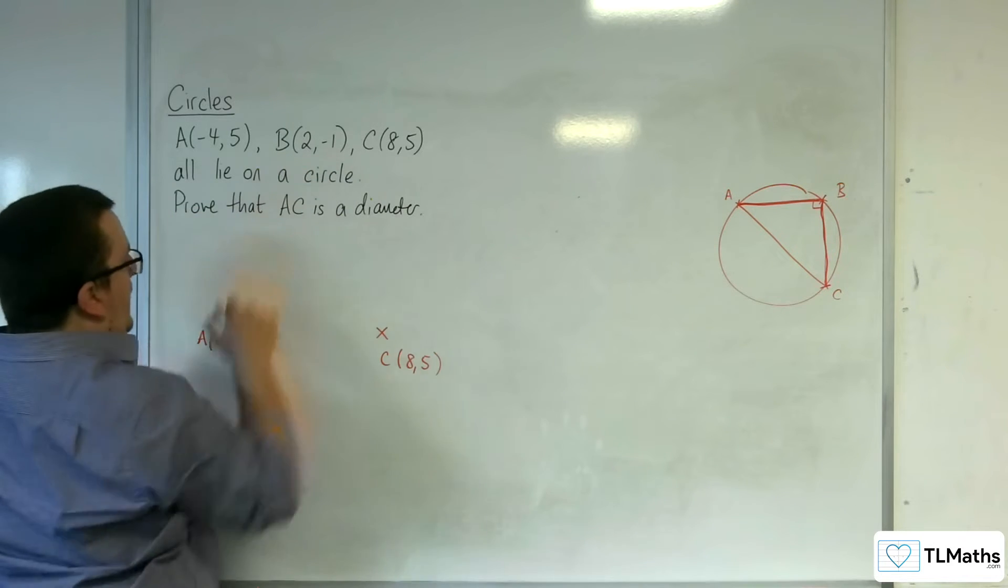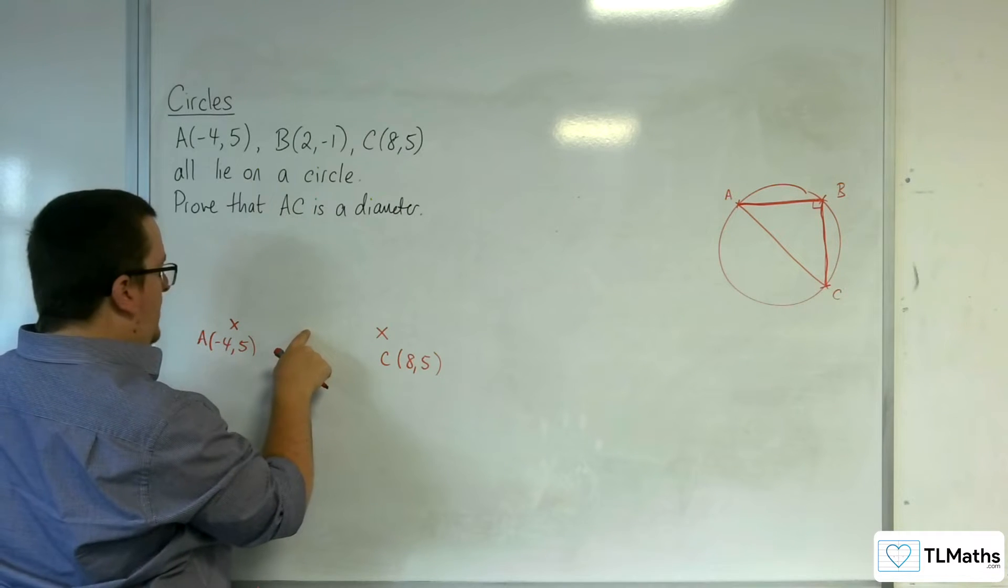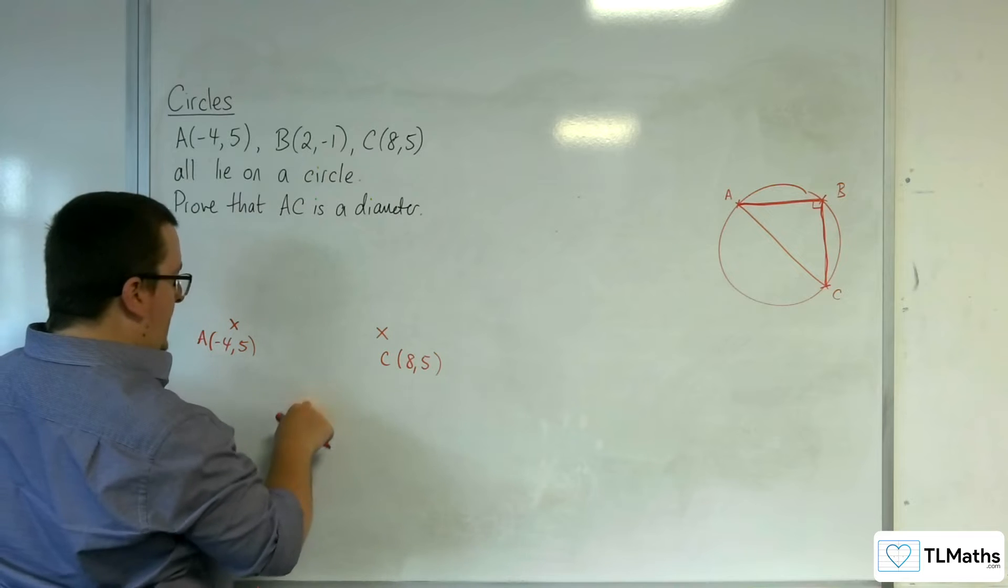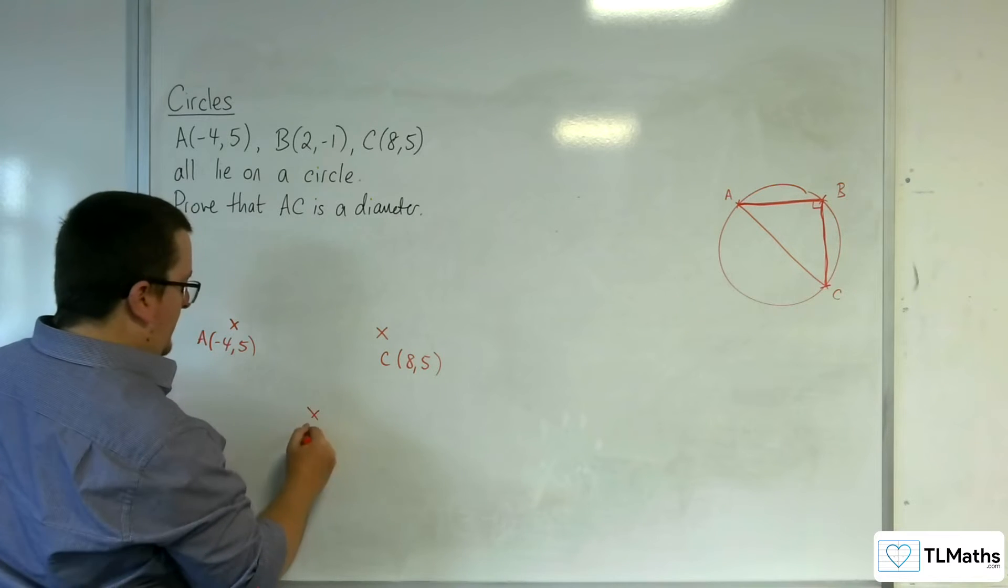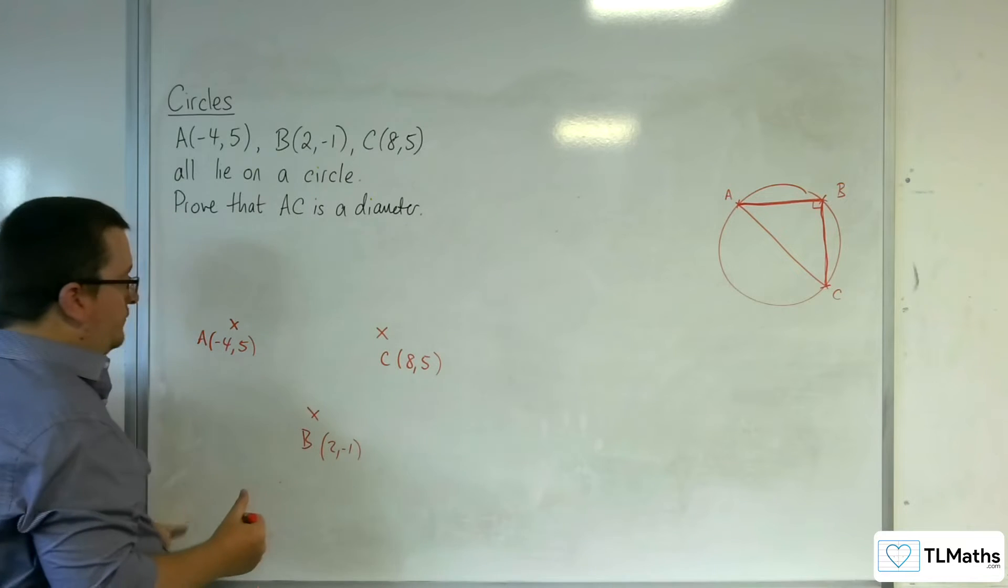And then B is two, minus one. So, somewhere, well, it's actually right bang in the middle, isn't it? But minus one, so further down. So, maybe there. So, there's B. Two, minus one. Right.